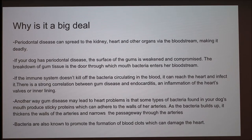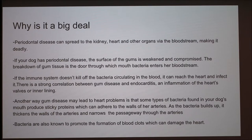Why is this a big deal? Periodontal disease can spread to the kidney, heart, and other organs via the bloodstream, making it very deadly. If your dog has periodontal disease, the surface of the gum is weakened and compromised, and the breakdown of gum tissue is the portal through which mouth bacteria enters the bloodstream. If the immune system doesn't kill off the circulating bacteria, it can reach the heart and infect it. There's a strong correlation between gum disease and endocarditis — inflammation of the heart's valves or lining. Additionally, some bacteria in the dog's mouth produce sticky proteins that adhere to artery walls, thickening them and narrowing the passageway. Bacteria are also known to promote the formation of blood clots, which can damage the heart.